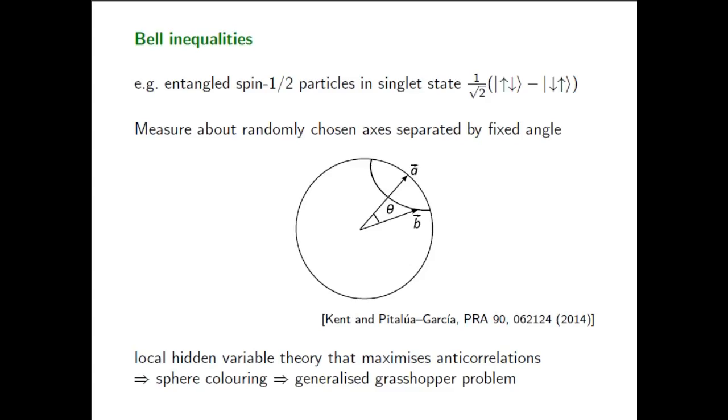We began studying the grasshopper problem to try to understand better the difference between quantum theory and classical physics. We think about measuring the spin of two particles about two random axes for particular states. Quantum theory predicts you will get opposite answers more often than any classical model allows.